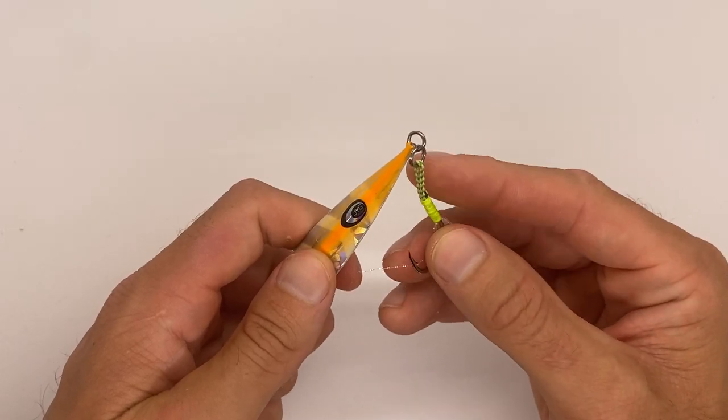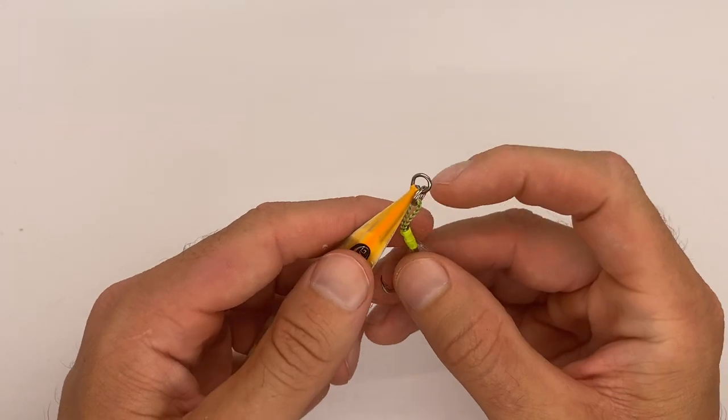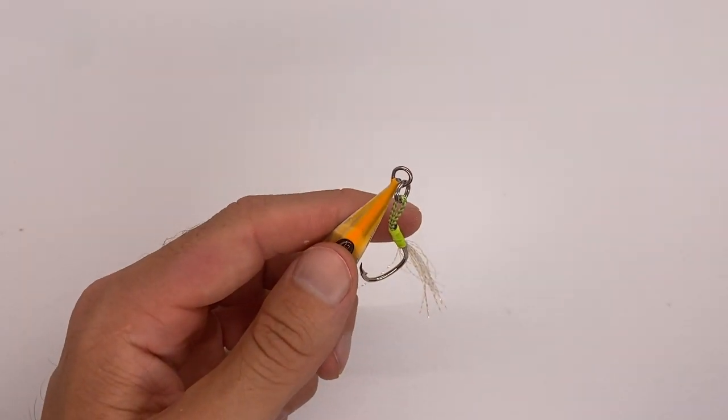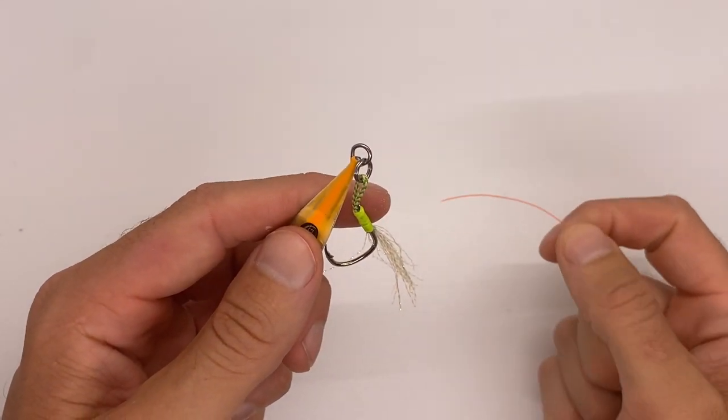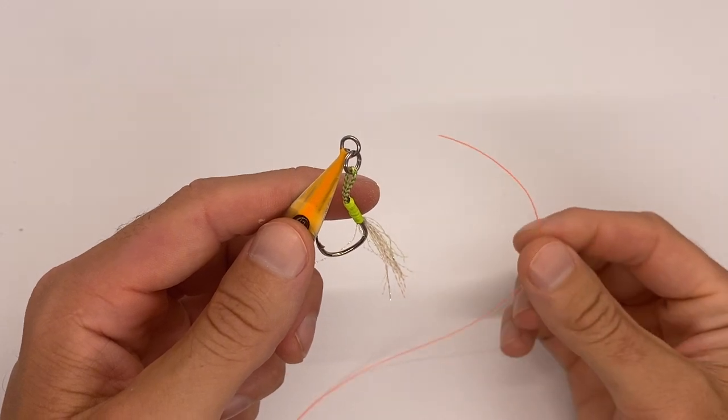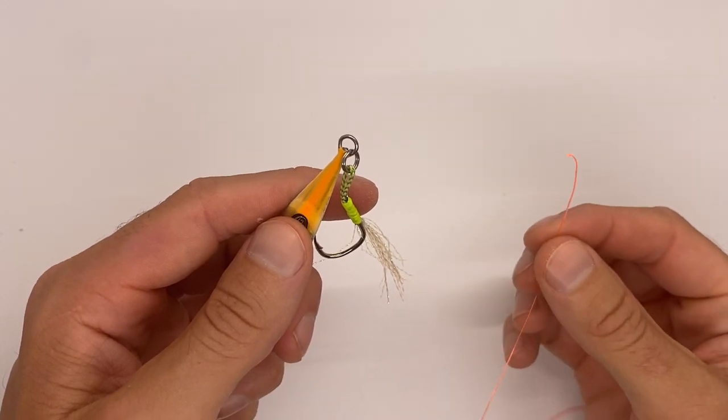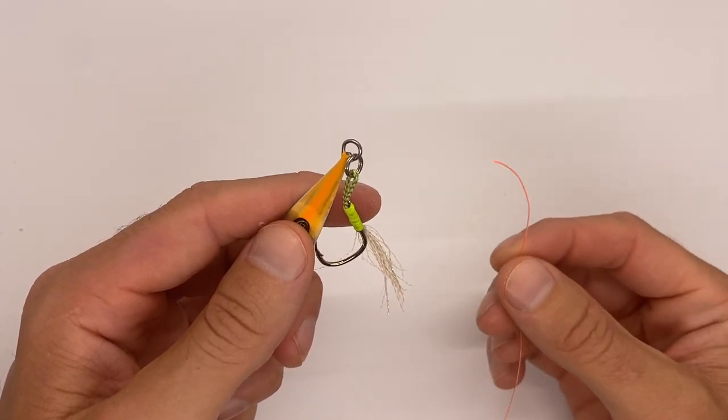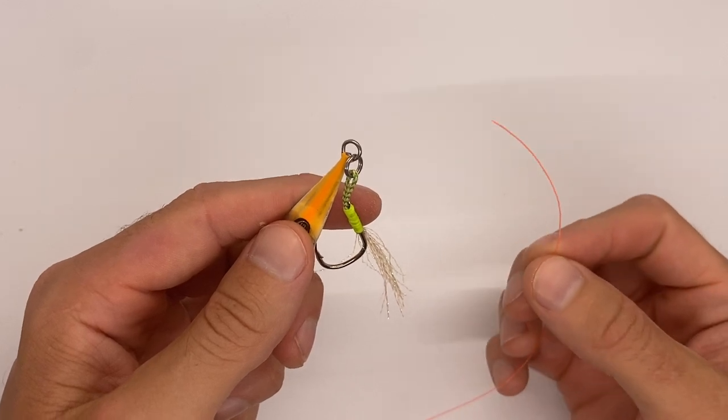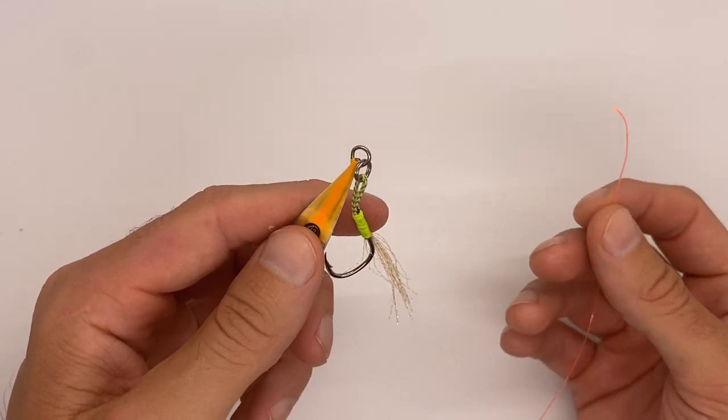But to give this jig action, I want to show you just a quick knot that I use. Instead of a clench knot or a uni knot, we want to tie some variation of your favorite loop knot. There's a lot of ways out there to get a strong, effective loop knot. Here's what I use.